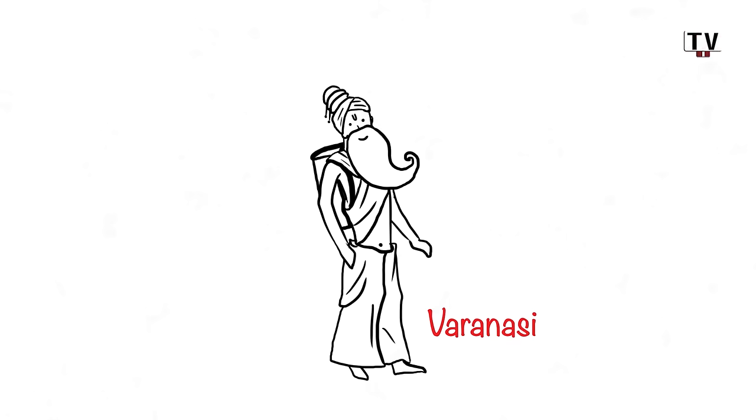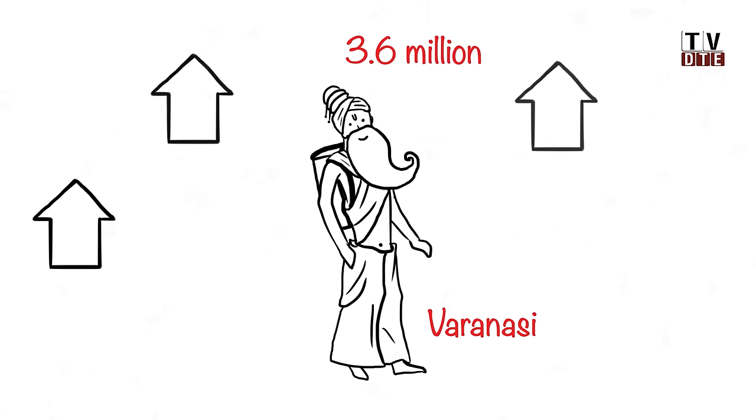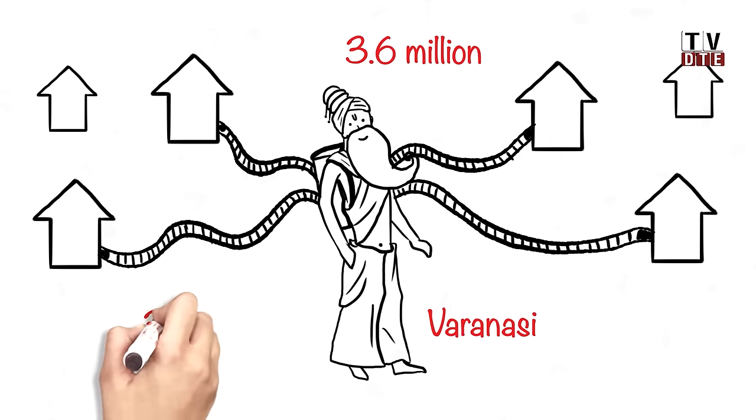Similarly, Varanasi, the holy city with a population of 3.6 million, has only 30% of its homes connected to sewer lines. Close to 300 million litres of sewage is generated in Varanasi, but the city's capacity to treat sewage is only 102 million litres per day. The rest of it is carried directly into the Ganga through open drains.